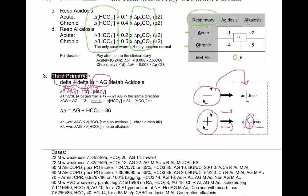A simpler way to do the delta-delta, if you don't want to subtract twice, is to use this equation: add the anion gap to the bicarb and then subtract 36. Again, if the number is negative, it's a metabolic acidosis. If the number is positive, it's a metabolic alkalosis.